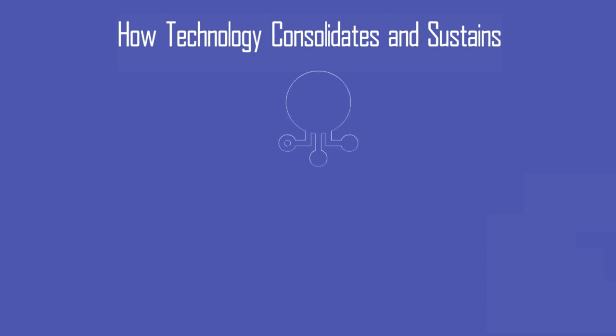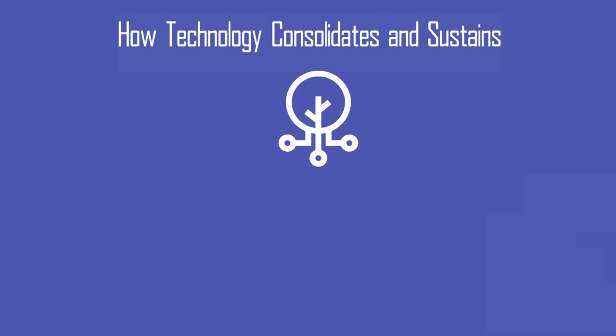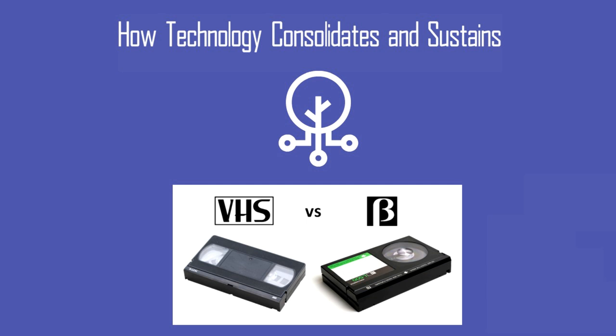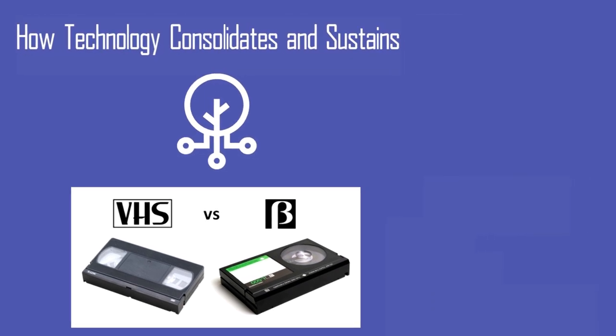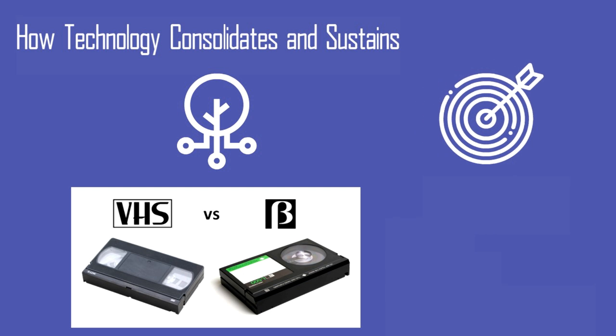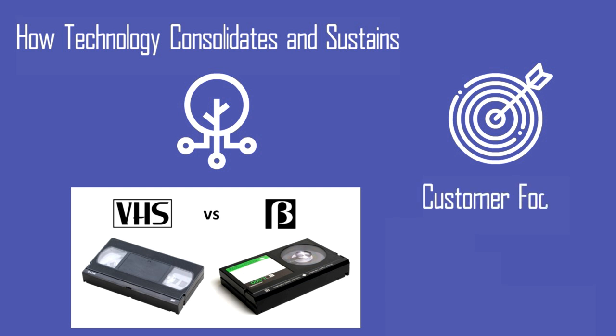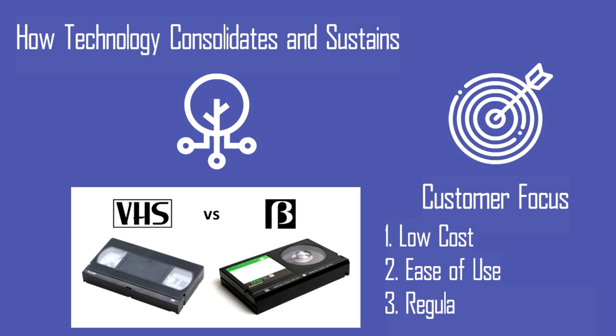Having looked at the elements of technology origination, we now look at how technology consolidates and sustains. Have you ever wondered why certain technologies take root while others perish? How VHS, which was relatively inferior technology compared to Betamax, was still able to outdo its counterpart? The reason is: when it comes to sustainability of technology, it is not the best technology that always wins, but the technology that has a greater customer focus. Customer focus entails lower cost of product, ease of use, and conformance to regulatory requirements.